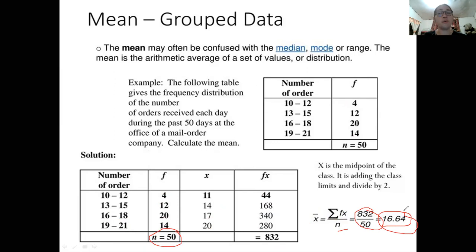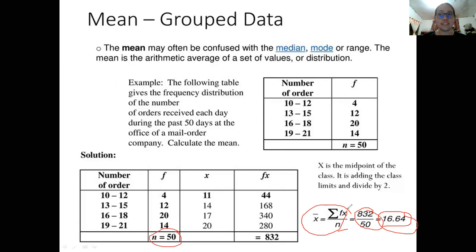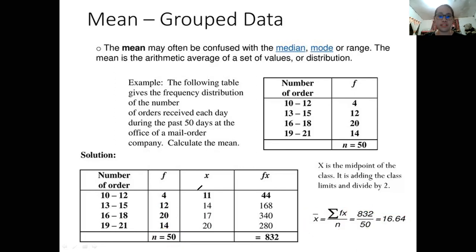To find the mean for grouped data, do not forget: you need your F (frequency), your X (midpoint), your FX products, the summation of FX, and your N. These are all the requirements needed to use the formula for the mean in grouped data. Always remember the table and what's in it in order to solve for the mean.